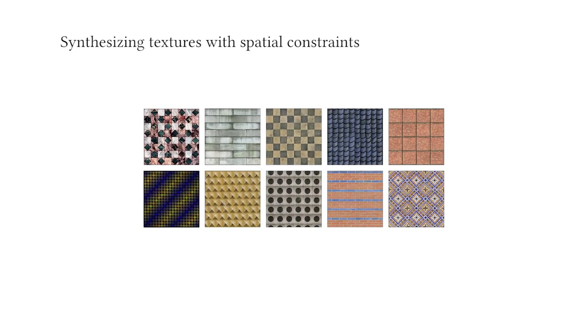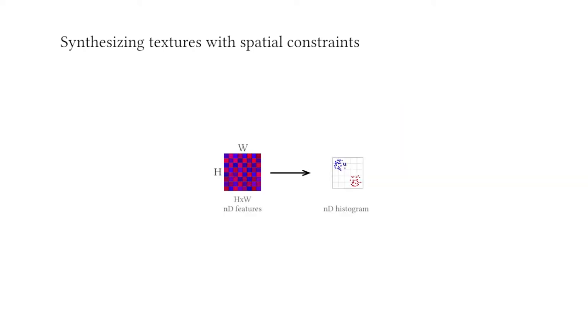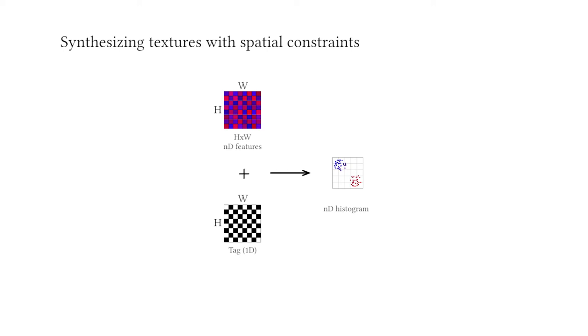Besides the shown benefits, we also show that our loss function is more flexible than gram. For example, we can handle regular textures using our sole loss function. We achieve this by concatenating a tag representing spatial control to the n-d feature spaces, resulting in an n-plus-1-d space. The additional dimension naturally clusters features by tag.